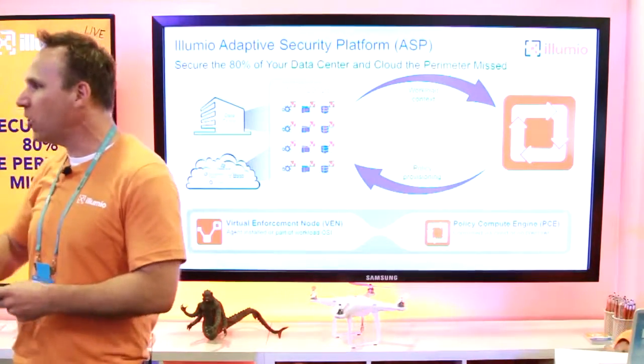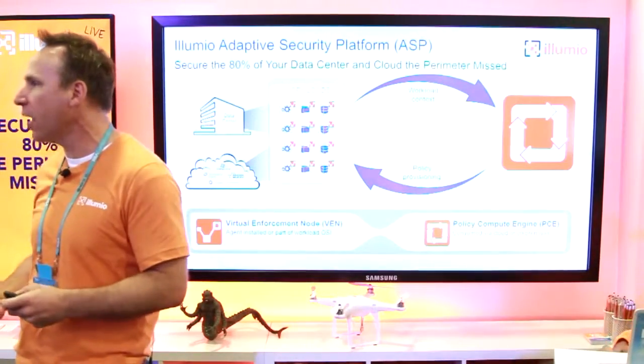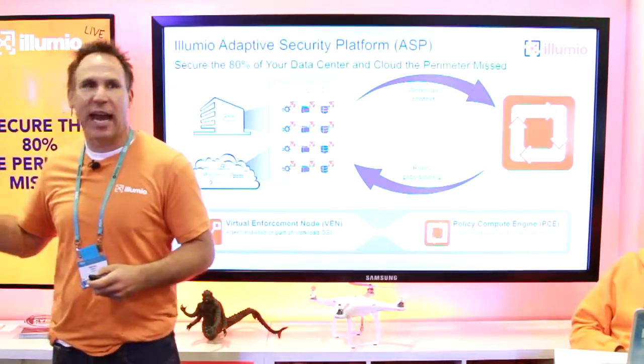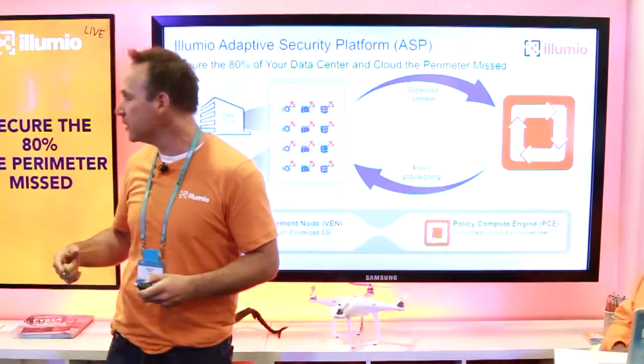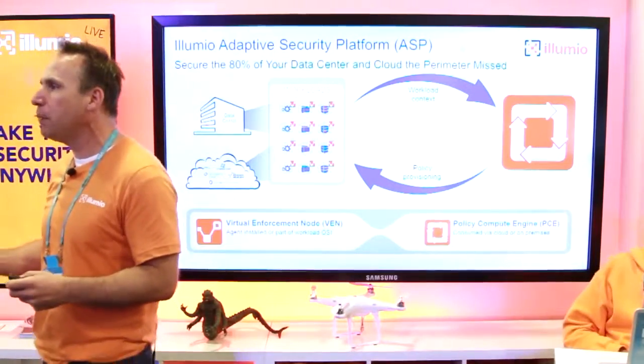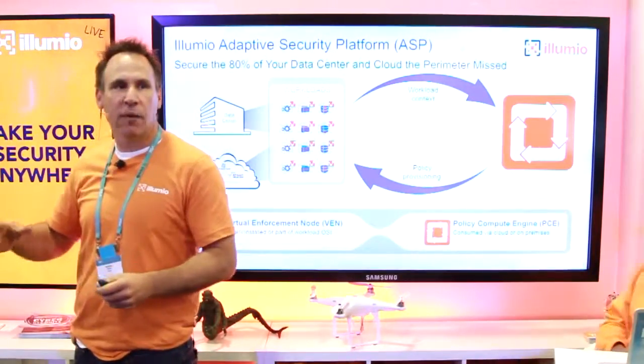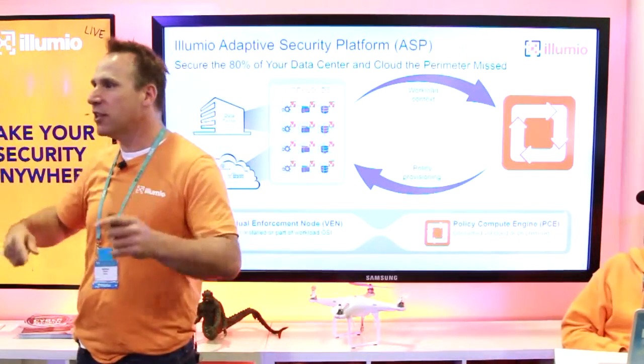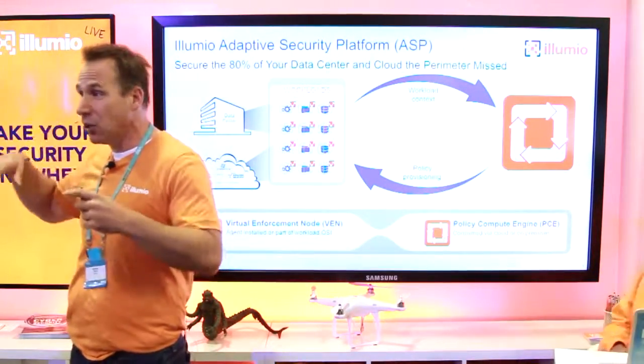You have no ability to detect what's going on. Illumio was basically, we want to secure the 80% of the traffic that the perimeter missed. And we've also wanted to be able to take your security anywhere. And anywhere could be your data center, it could be Amazon, it could be Azure, it could be any combination thereof. And it could be a never-ending evolution of anywhere.